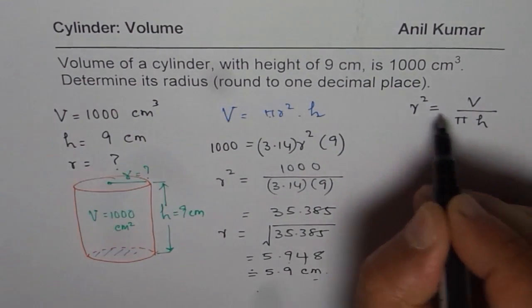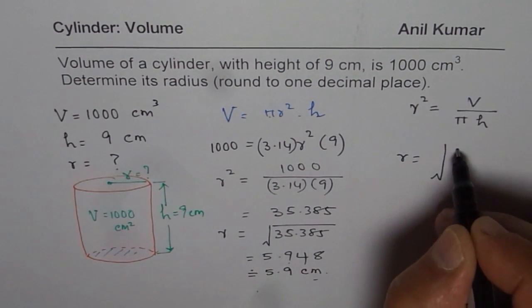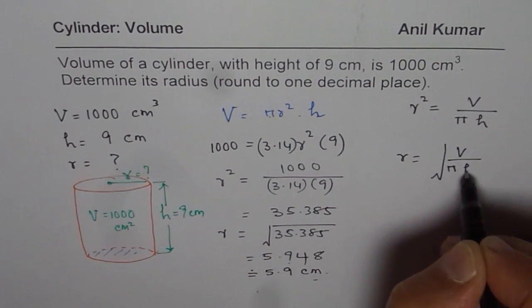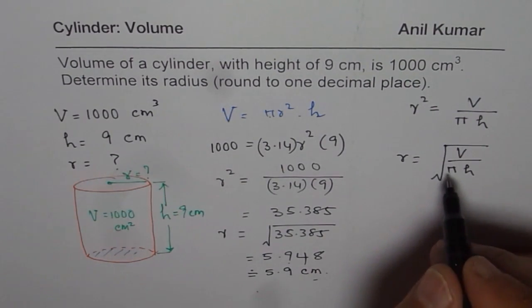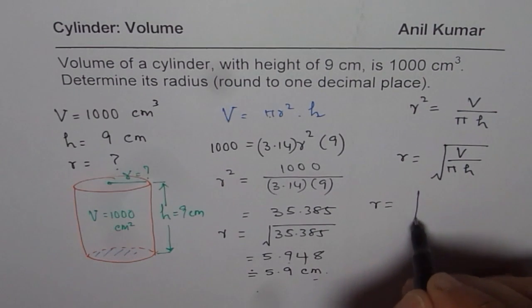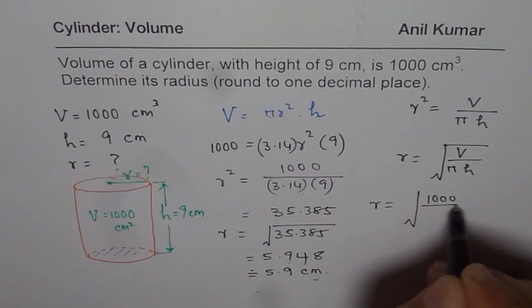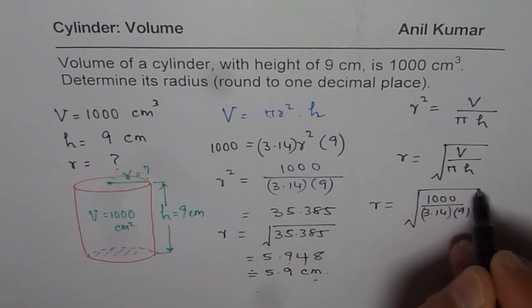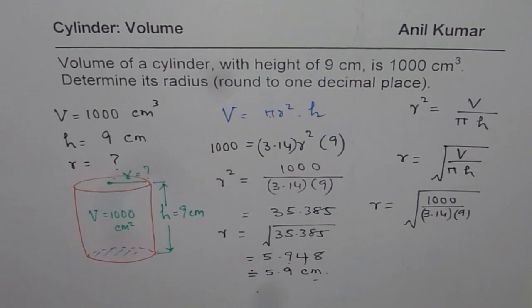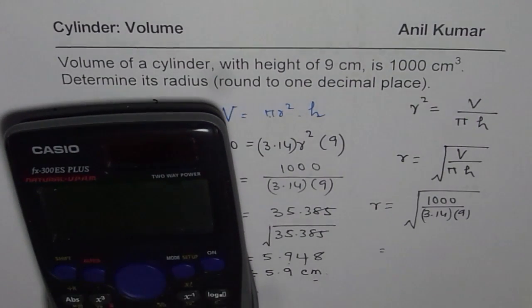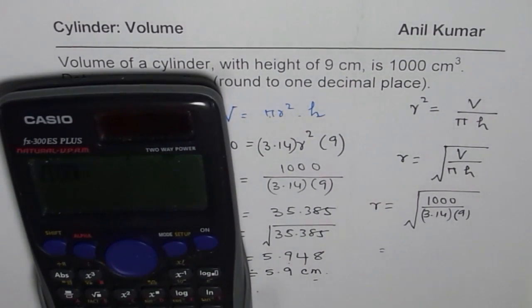And then radius equals to square root of volume divided by pi and h. So once you do that, you can directly find. So you can say radius equals to volume is 1000 divided by 3.14 times 9. So that is also a way to find radius directly. So we have square root of 1000 divided by 3.14 times 9.